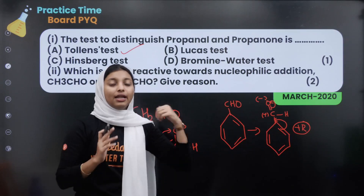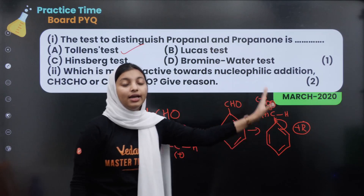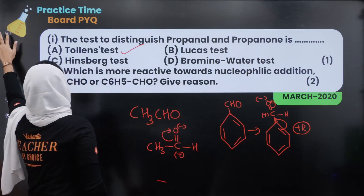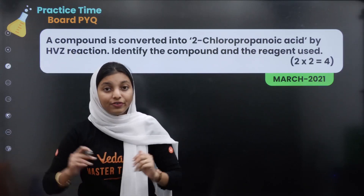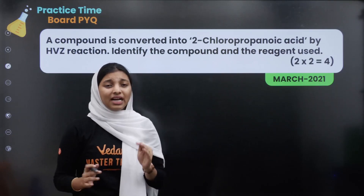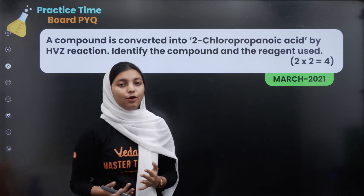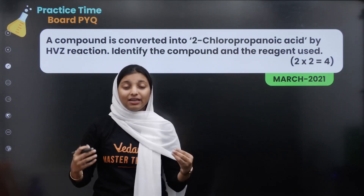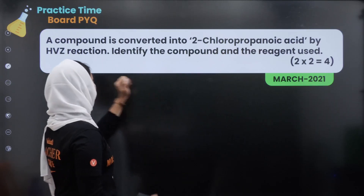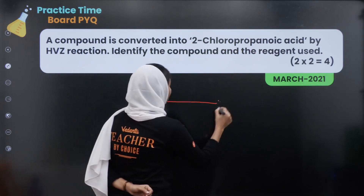So CH3CHO is more reactive towards nucleophilic addition reaction. This question appeared in March 2020 and again in 2021. If you practice PYQs, you will be able to manage time and revise the whole topic effectively. This compound is converted to 2-chloropropanoic acid by the HBZ reaction.